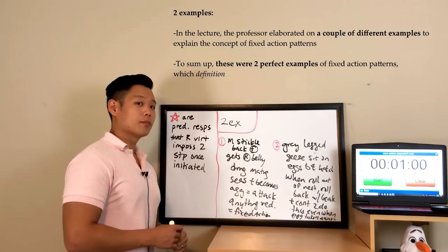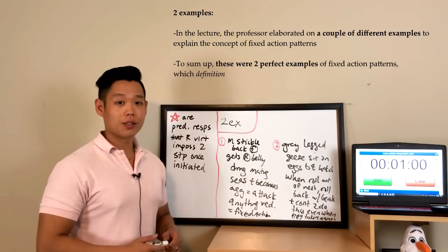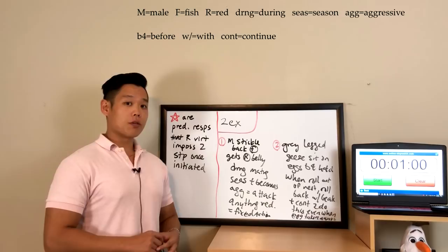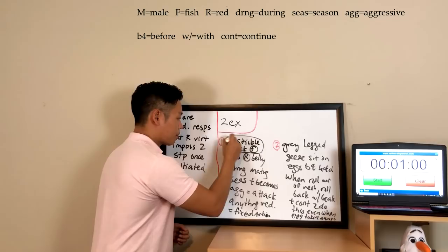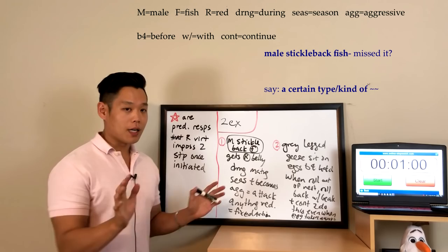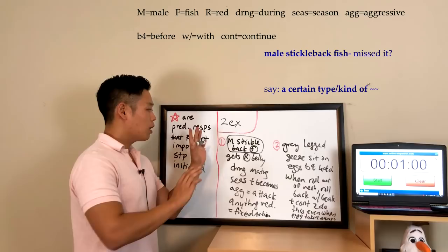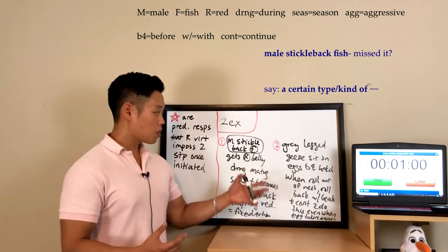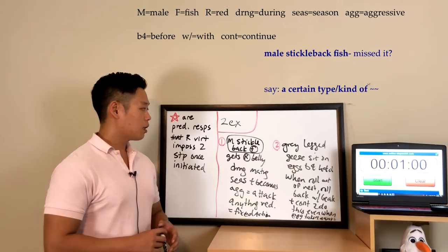The first example was about the male stickleback fish. If you missed this name, which is very likely, you can say 'a certain type of fish' — you don't even have to mention 'male.' For the second animal I'll say 'gray-legged geese,' but again if you missed the name you can say 'a certain type of geese.' For a lecture like this, the directions might actually give you the names of the animals mentioned, so if they are provided please catch them and say them.